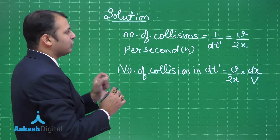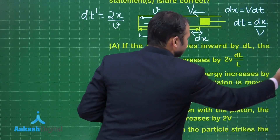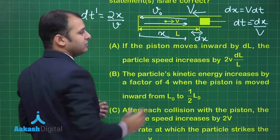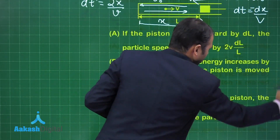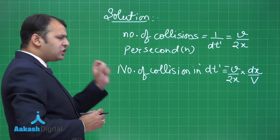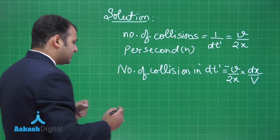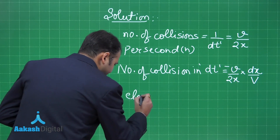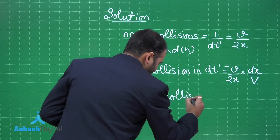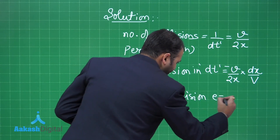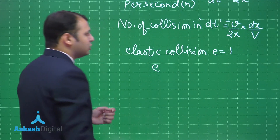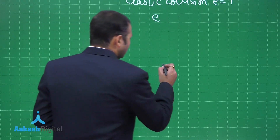The piston is getting inside, so the sign is negative as the distance is decreasing. Now we know the number of collisions. For each collision, since it is an elastic collision, e = 1. The coefficient of restitution e equals velocity of separation divided by velocity of approach.